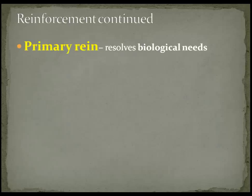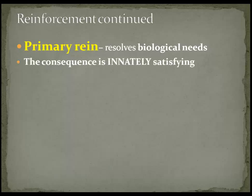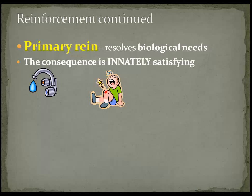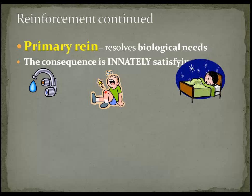Let's look at primary reinforcers and secondary reinforcers. Primary reinforcers resolve biological needs — primary means built in, unlearned. The consequence is innately satisfying. For example, when you're thirsty and you drink water, that is innately satisfying. If you hurt yourself and do something to remove the pain, that is innately satisfying. When you're tired and you go to sleep, that is a primary reinforcer. Importantly, we're analyzing the consequence — what happens after the behavior — not the behavior itself. You may have to learn the behavior, but you don't have to learn that the outcome is pleasant.